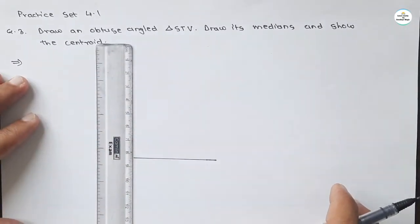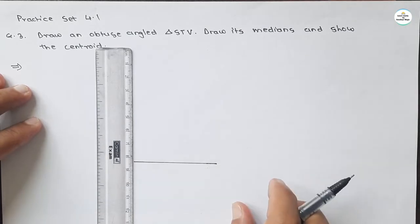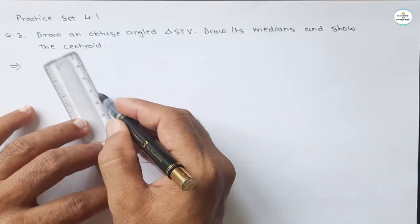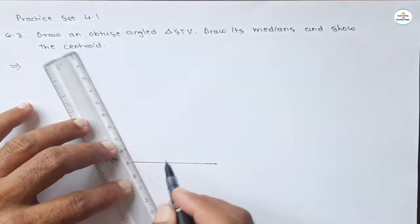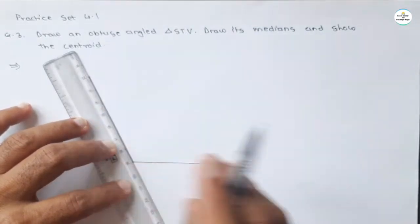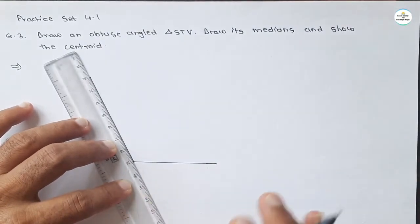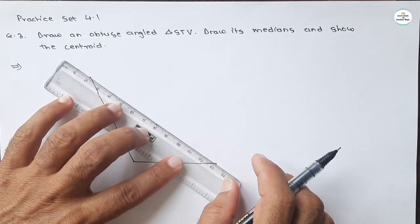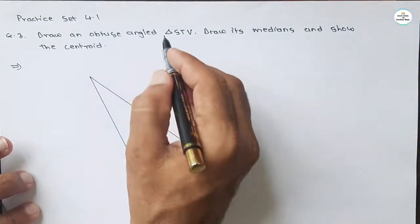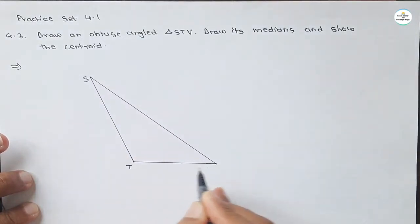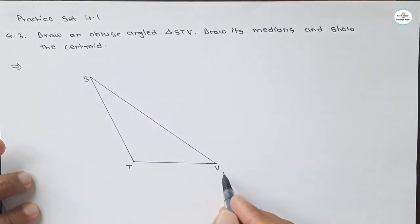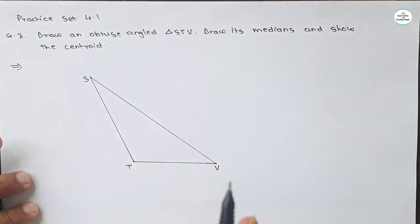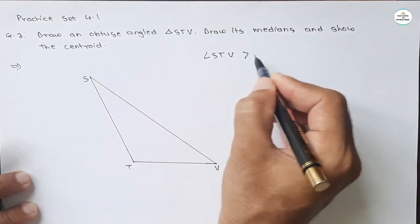If we draw a straight line, this will be 90 degrees, and we have to draw an obtuse angle, meaning more than 90 degrees — like this. Again, take seven centimeters. This angle is more than 90 degrees. Join these three points and you will get an obtuse angle triangle. Name the vertices S, T, and V. This triangle is obtuse because angle STV is greater than 90 degrees.